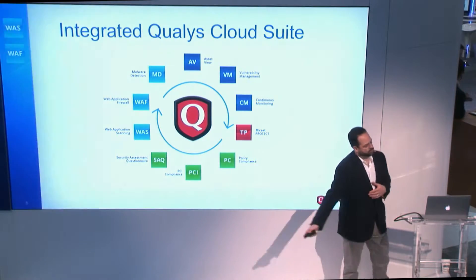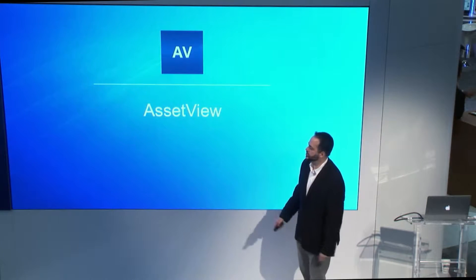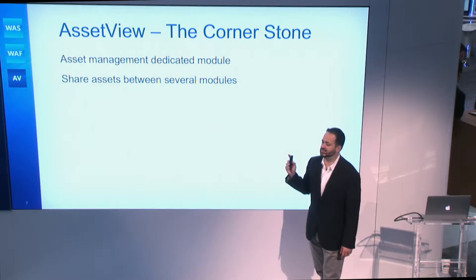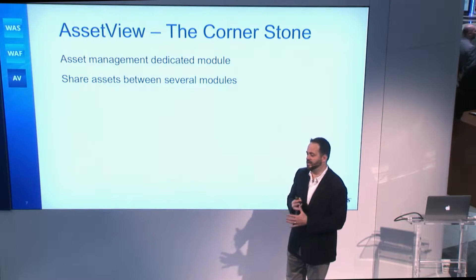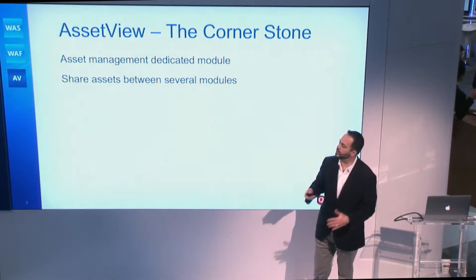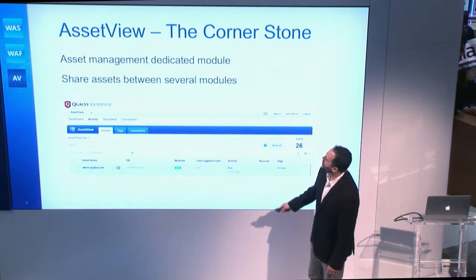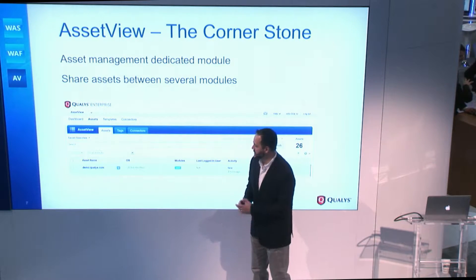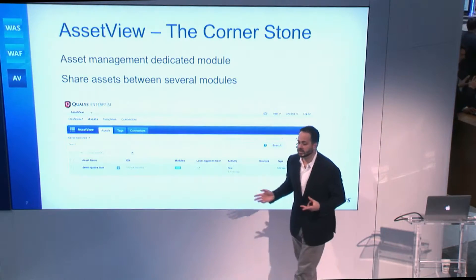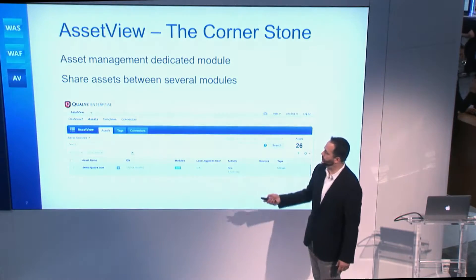We're here today to give a quick review of our offerings in the web application security suite — all starting with asset view and asset management for shared assets. This could be web servers, web applications, anything in your environment. You could tie it to web application security and share those asset details. Once you find an asset or an application, you can instantly associate it with WAF and WAS modules, and by doing that, you're going to enable the virtual patching.